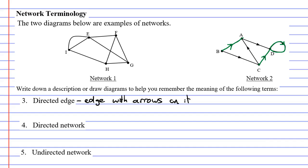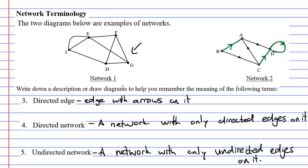Now term number four which is a directed network. Basically a directed network is a network with only directed edges on it. So network one is an undirected network because none of the edges have an arrow on them while network two is a directed network.